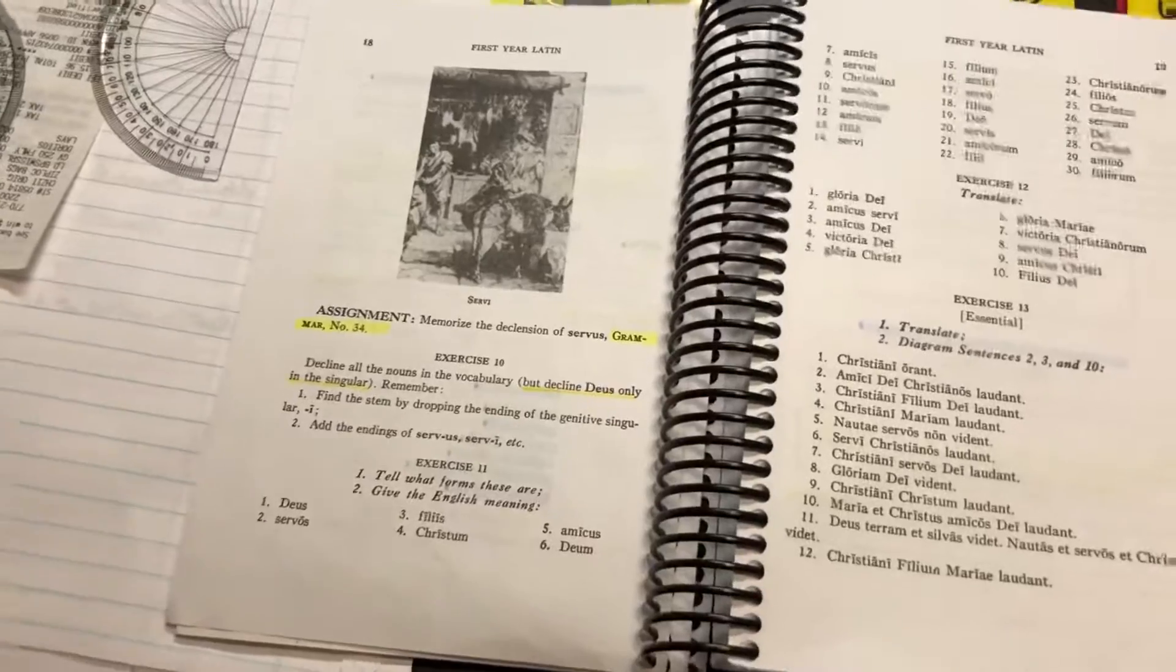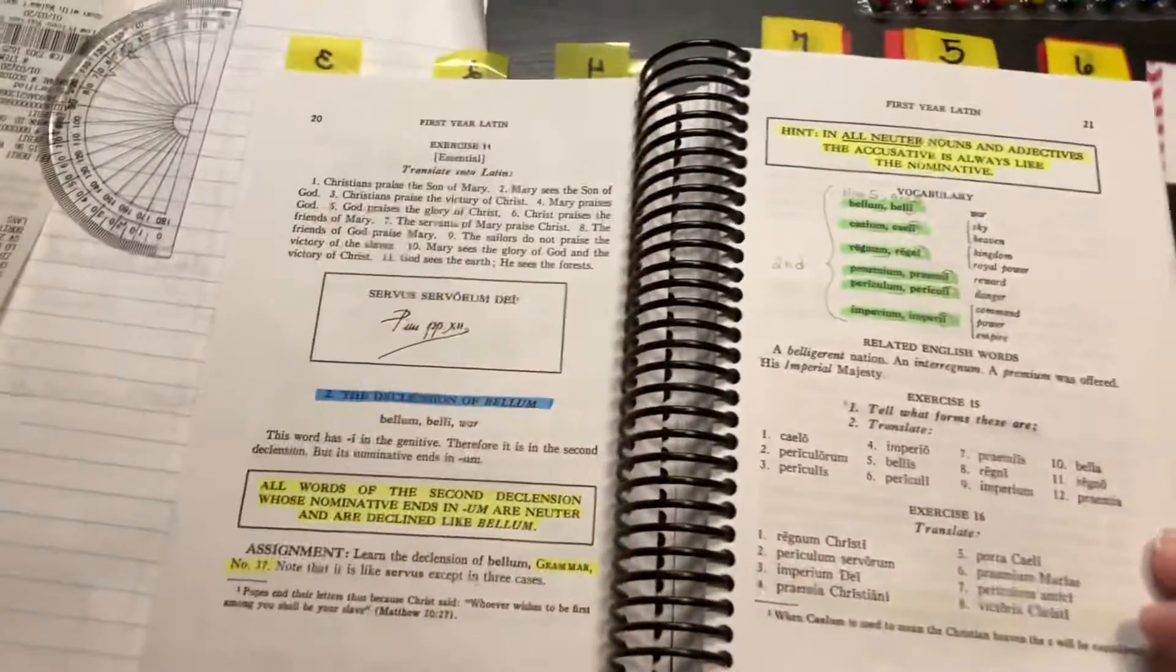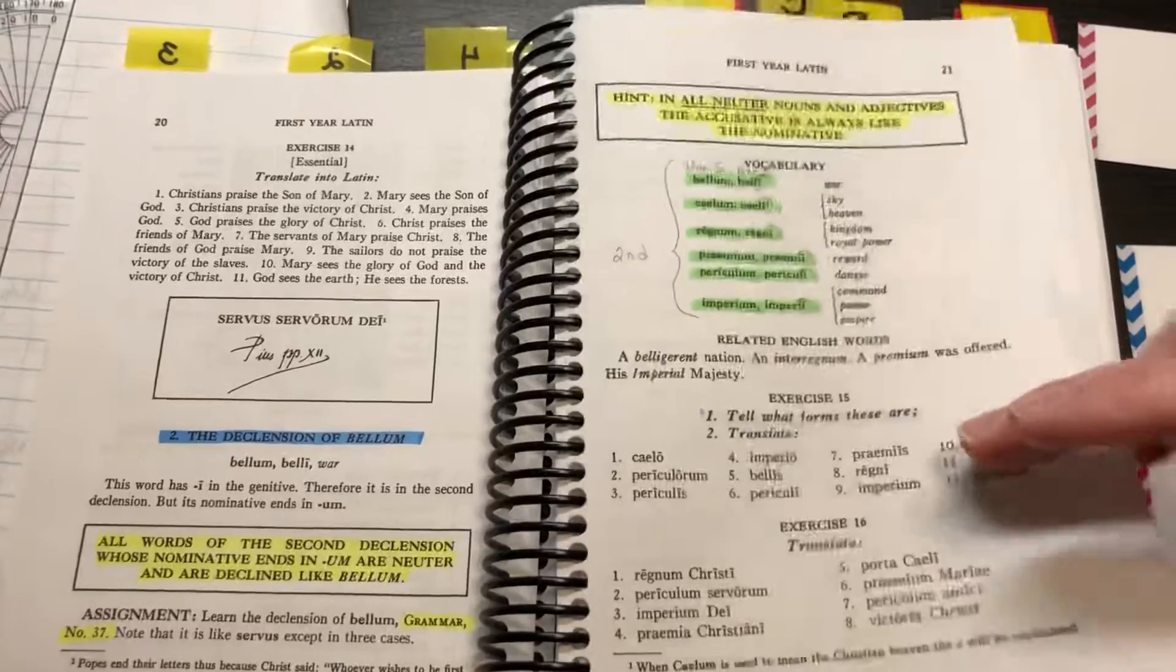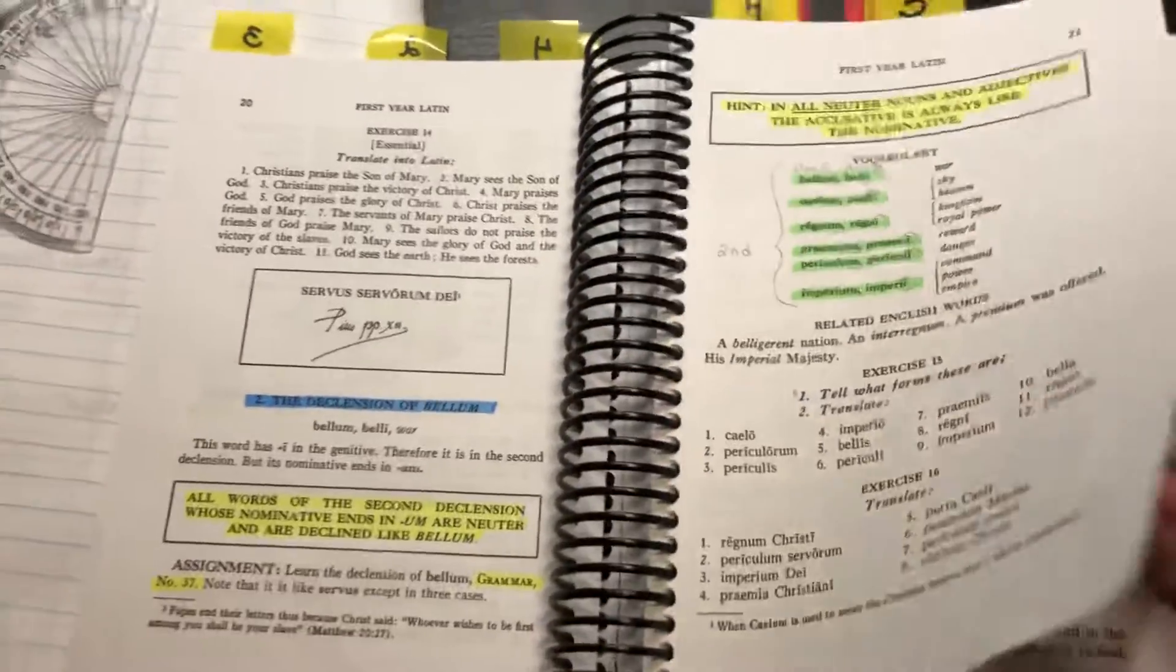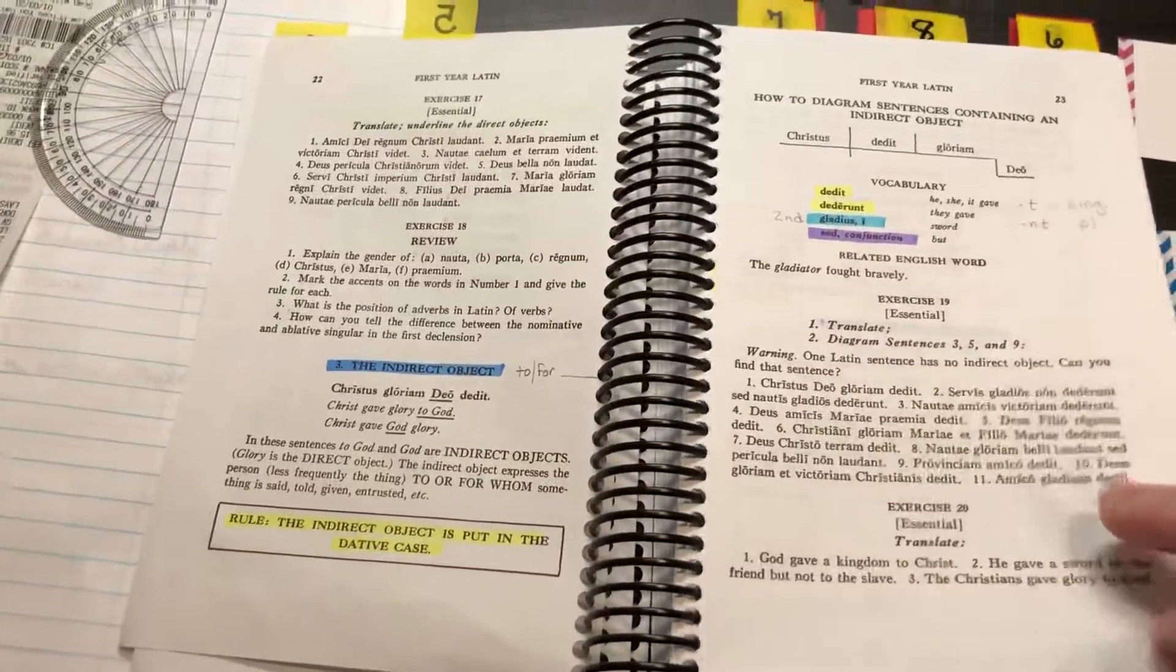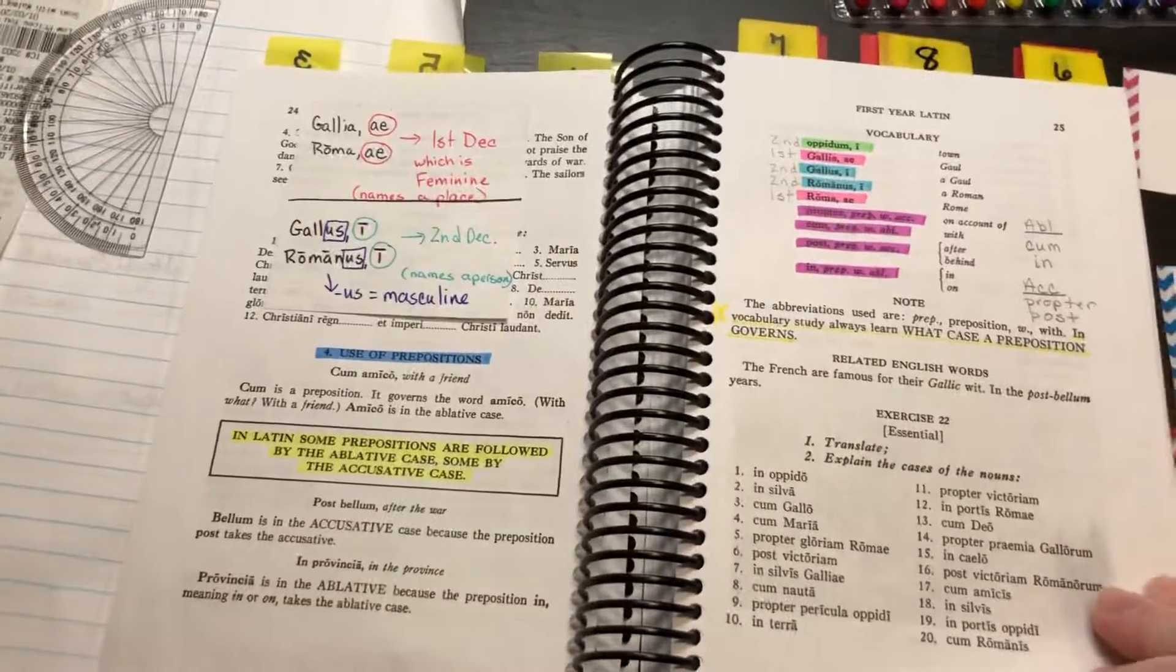You can see here I've got my neuter nouns in green, and then you can just sort of see how this process works.